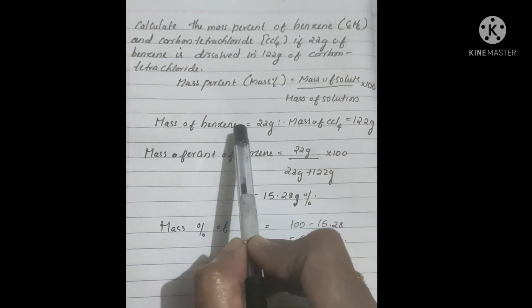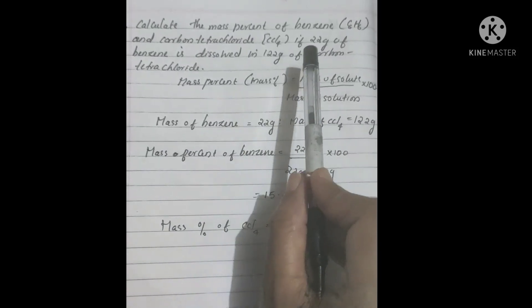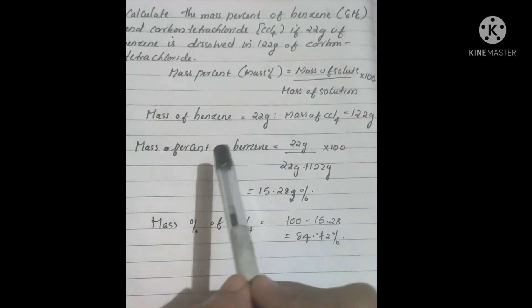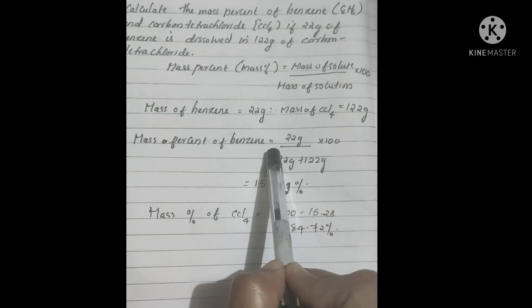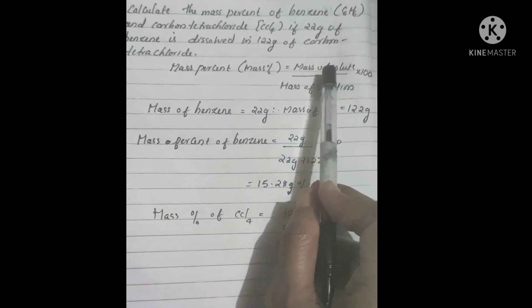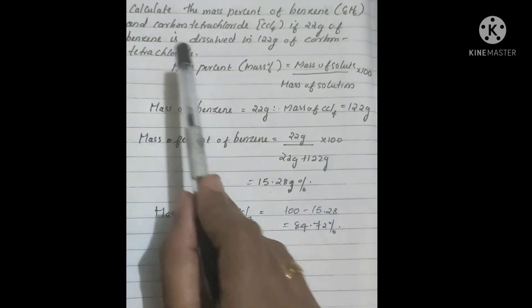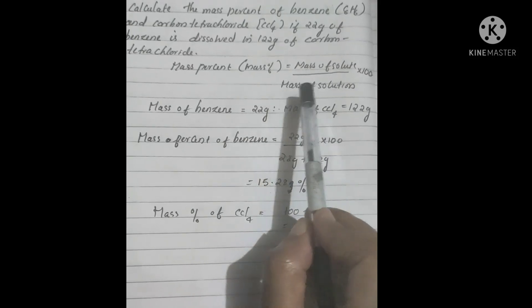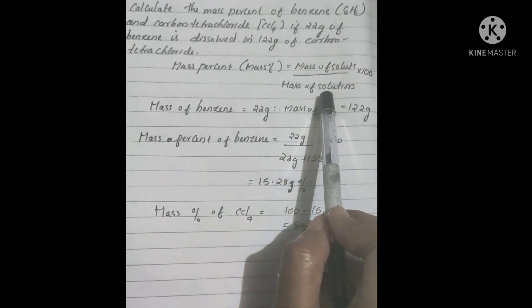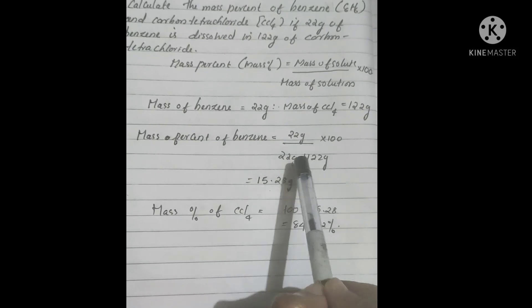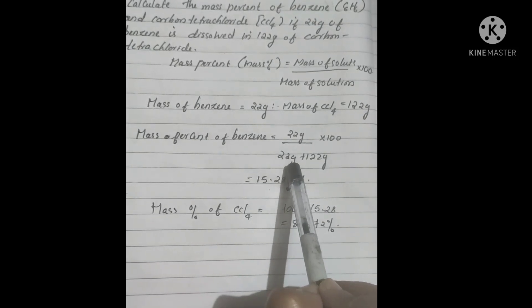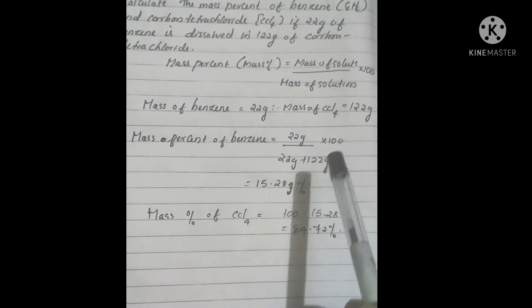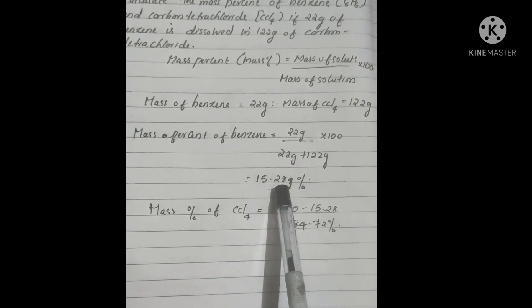Mass of benzene equals 22 grams, which is given in the question. Mass of carbon tetrachloride equals 122 grams, also given in the question. Mass percentage of benzene equals mass of solute — here the solute is benzene — that is 22 grams, divided by mass of solution. Mass of solution equals mass of solute plus mass of solvent, that is 22 grams plus 122 grams, multiplied by 100, which equals 15.28%.